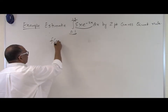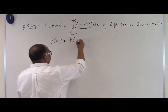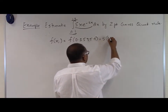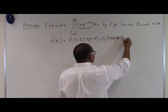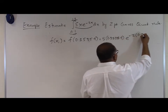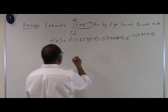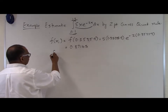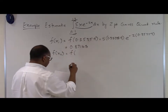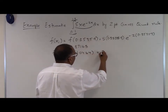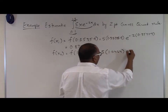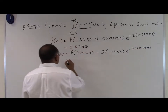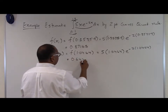Let's calculate the value of the function at x1. Our x1 is 0.35359, so f(x1) is 5 times 0.35359 times e to the power of minus 2 times 0.35359, which turns out to be 0.87165. Similarly, f(x2) at x2 equals 1.0464 gives 5 times 1.0464 times e to the power of minus 2 times 1.0464, which turns out to be 0.64532.